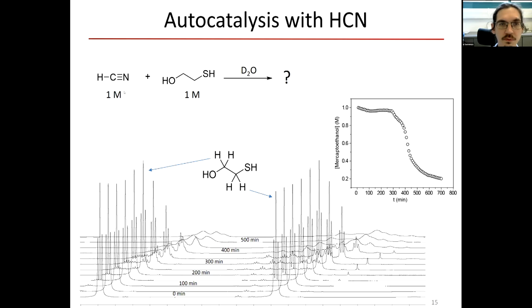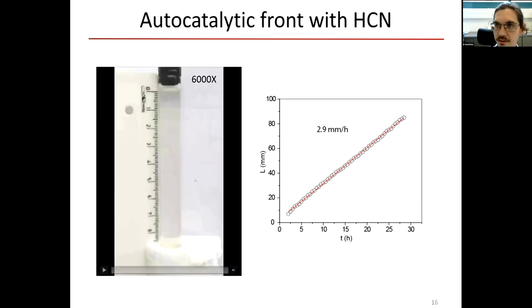And in this project, we actually started from just looking how some model thiols, mercaptoethanol would react with HCN. And we actually observed that when you just mix one molar HCN solution with 0.1 molar mercaptoethanol solution in D2O, you get, sort of, reaction happened quickly after delay. So it has some sort of sigmoidal curve shown here. It's typical for autocatalysis, yet delay could be caused by many other mechanisms. So what we did, we ran this reaction in hydrogel, we filled the tube with the hydrogel.